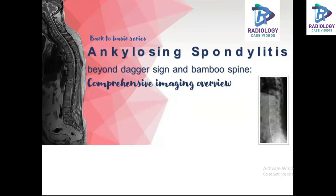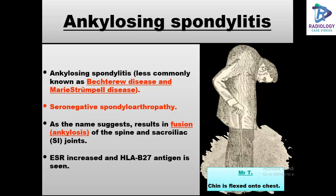Ankylosing spondylitis is also less commonly known as Beckett-Rowe disease and Marie Strümpell disease. It's a seronegative spondyloarthropathy. Ankylosis means fusion, so it refers to the involvement and eventual fusion of the spine and sacroiliac joints. ESR is raised and HLA-B27 antigen is seen. AS has a male predilection.